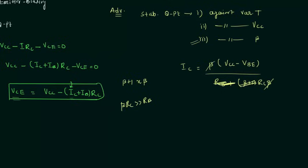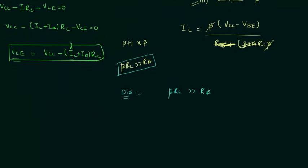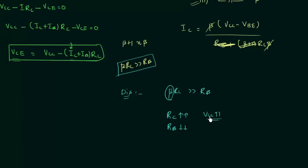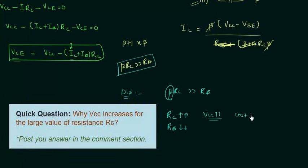Now we will talk about the disadvantages. To satisfy the condition that beta times Rc must be greater than Rb, most of the time we do not have an exact idea of the beta value. So to satisfy this condition, we must make Rc very large or make resistance Rb very low. If we make Rc very large, a high value of biasing voltage VCC is required, which increases cost and the necessary precautions.